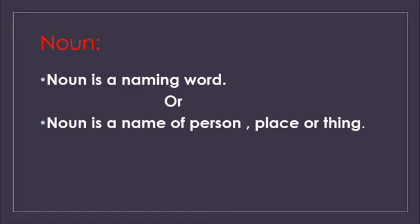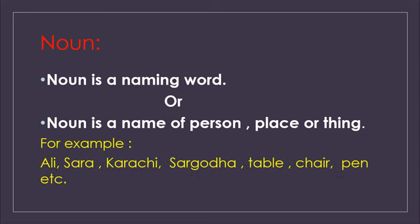Naming word means har ek chiz ka naam jo hai wo noun hai. So there are few examples: Ali, Sara — these are the names of persons. Karachi, Sargoda — these are the names of cities of Pakistan. And table, chair, pen — these are things, etc. — meaning so many other things, places and persons also. Clear?